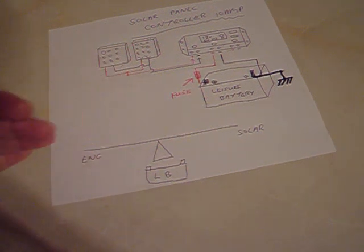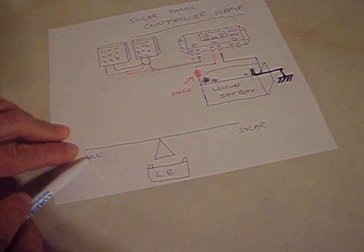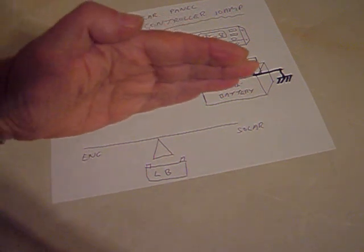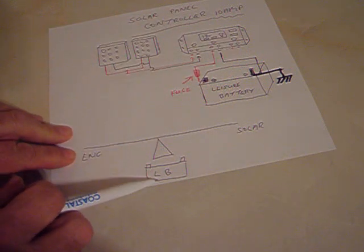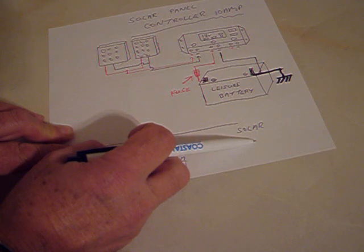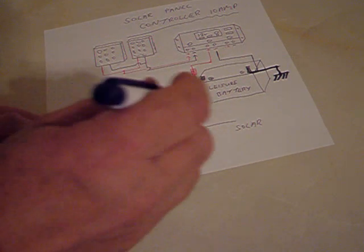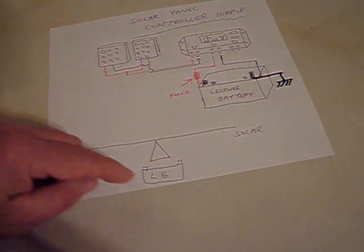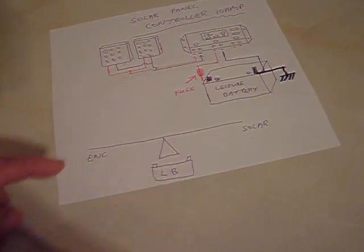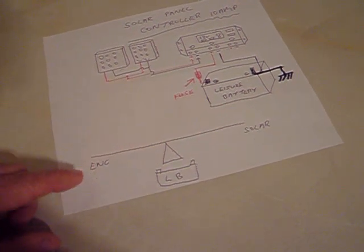Whichever is giving the stronger current, if the engine is more powerful and it's charging the battery, the seesaw will tip and it will charge the leisure battery and the solar charger will reduce its charge because it doesn't need to. And vice versa. So whichever is giving the stronger output will put charging to the battery and they work with one another, not against one another. It's very simple.